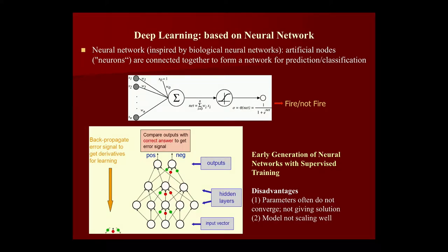The basic neural network has been built for some time. It is inspired by biological neural networks and uses artificial nodes called neurons that connect together to form a network for prediction and classification. A node takes input from many adjacent nodes, sums all those inputs, passes the data through an activation function, and depending on the threshold, will either fire or not and pass on to the next layer.